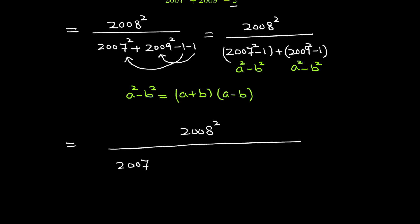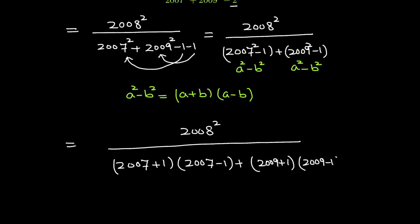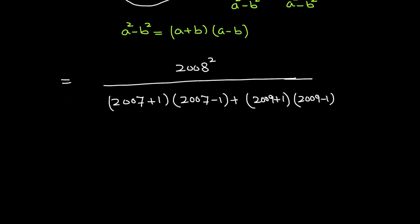For 2007 squared minus 1: a plus b is 2007 plus 1, and a minus b is 2007 minus 1. Then for 2009 squared minus 1: a plus b is 2009 plus 1 and a minus b is 2009 minus 1.